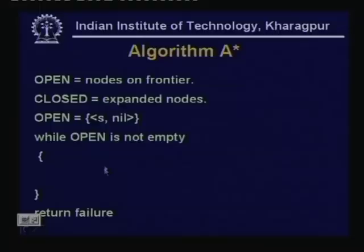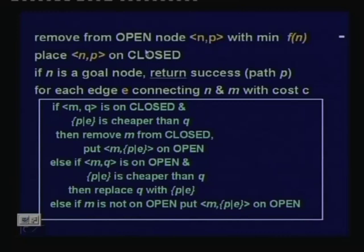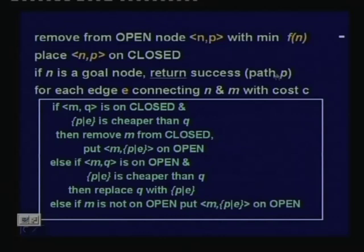In the body of the loop, we remove from open the node n,p whose f(n) value is minimum — where n is the node and p is the path associated with the node. We put n,p on closed because it has been expanded. If n is a goal node we return success and return the path p. Otherwise we find all edges coming out of node n connecting it with some other node m.